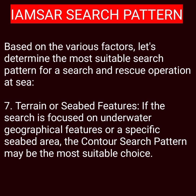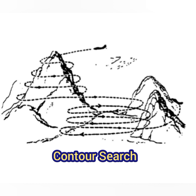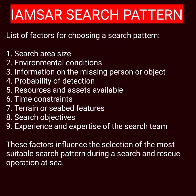Factor seven is terrain and seabed features. If the search is focused on underwater geographical features or a specific seabed area, the contour search pattern may be the most suitable choice. The contour search is usually carried out around mountains and in valleys where there is a sharp change in elevation and other patterns are not practical. The search is started from the highest peak and goes from top to bottom, with a new search altitude for each circuit; the search altitude interval may be 150 to 300 meters. Even when searching for a person in deep seas, knowledge of underwater terrain is essential for safe navigation. Submerged rock reefs, shoals, and other hazards can pose significant risk to vessels, especially during rescue operations. Understanding the seabed topography helps rescuers plan safe routes and avoid potential obstacles.